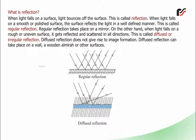On the other hand, when light falls on a rough or uneven surface, it gets reflected and scattered in all directions. This is called diffused or irregular reflection.